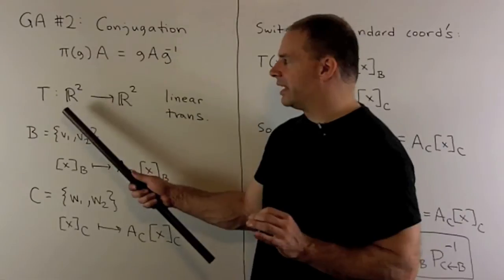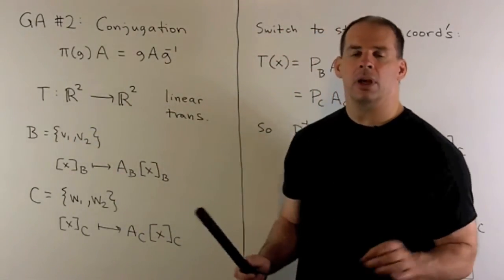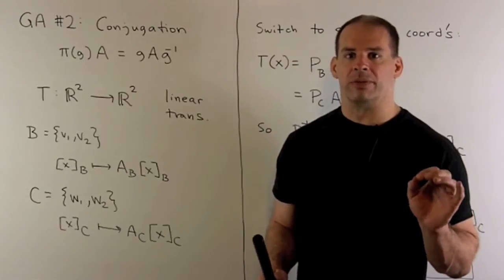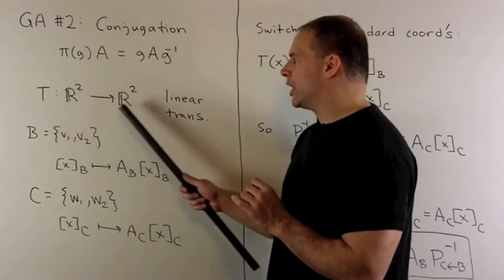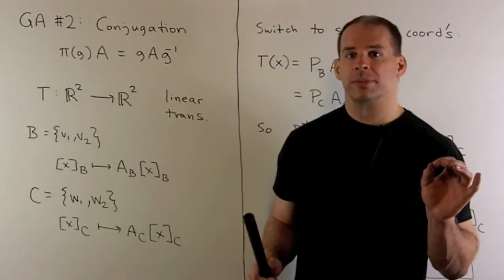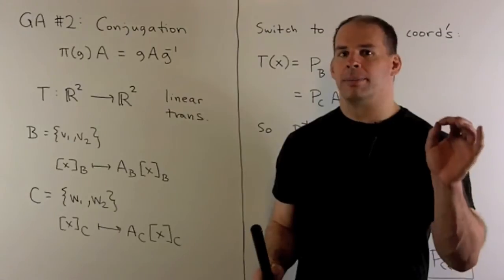Now, if I take a linear transformation T from R² to R², we'll have our bases B and C from before. I can take my linear transformation to coordinates.